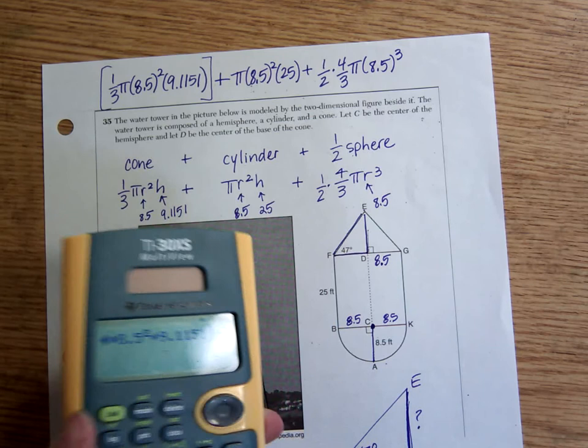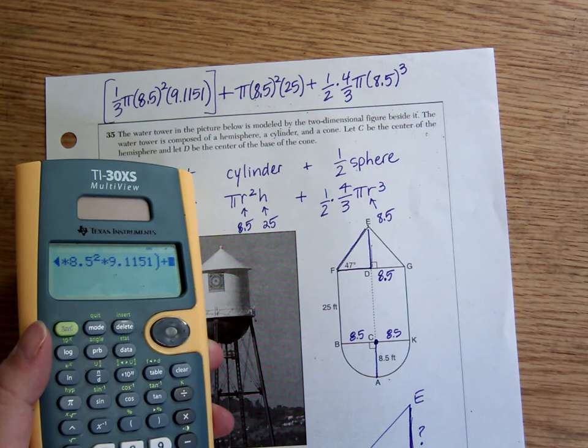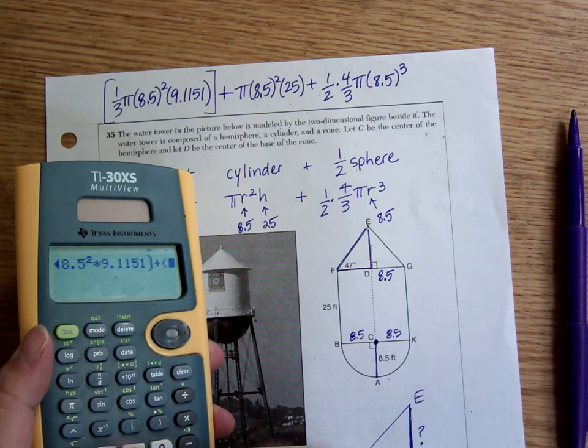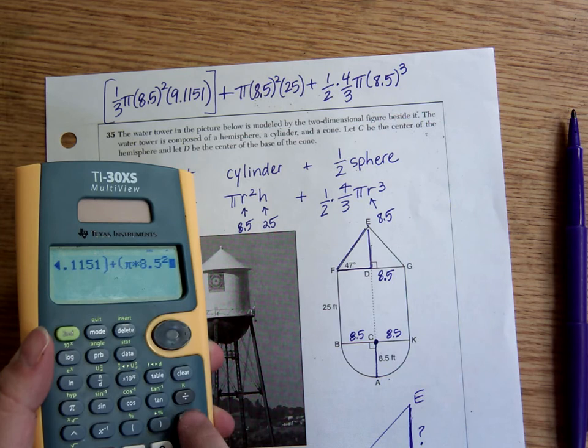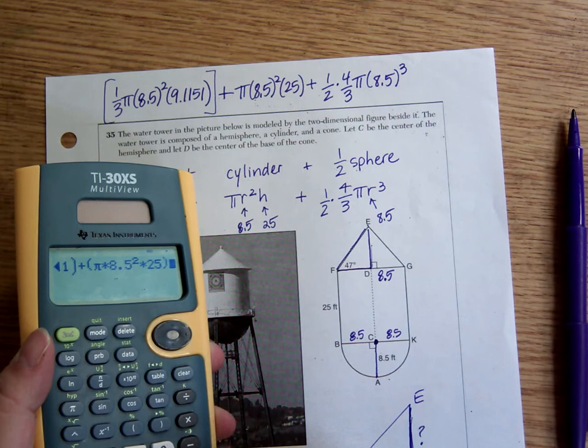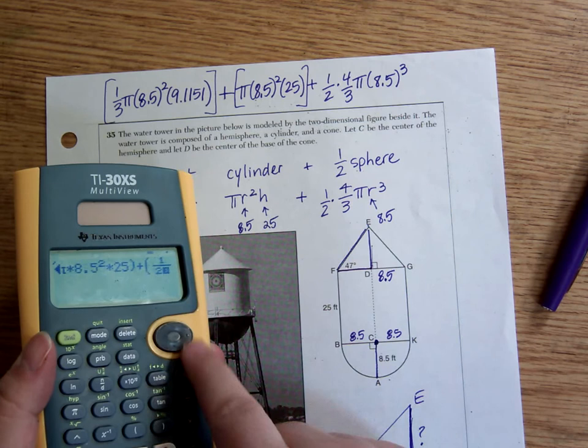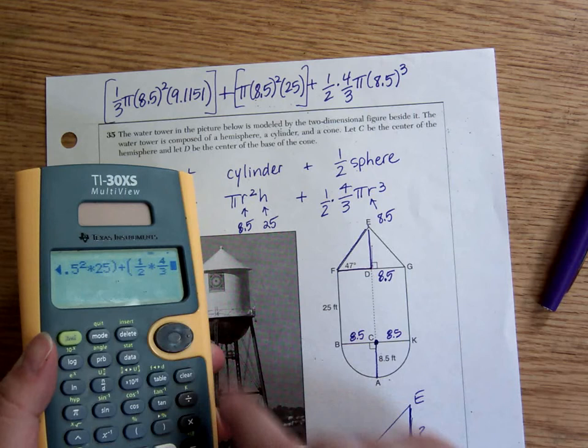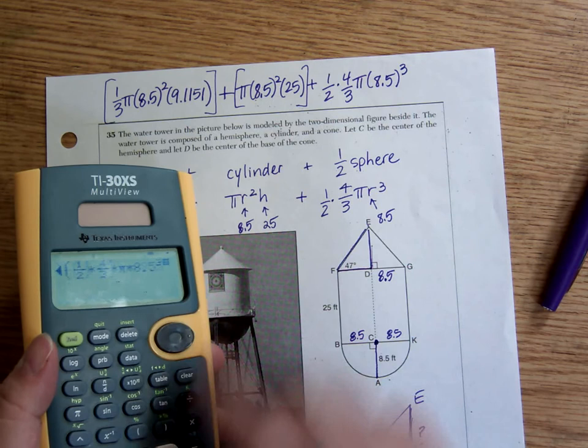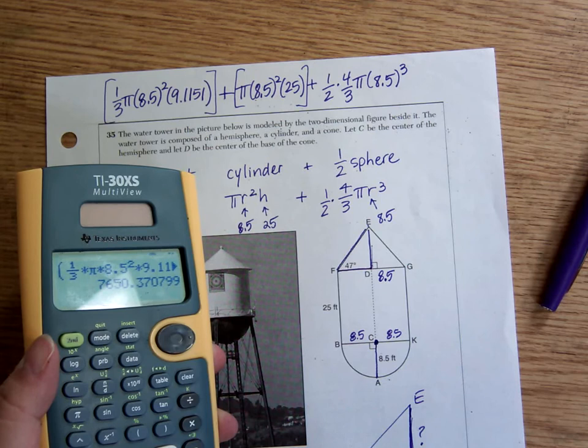Plus, sorry that you can't see through the glare. I was thinking it was perfect, but then I moved it. Now I've got to do these, again in parentheses. Pi, always use the pi button, times 8.5 squared times 25. Close that parentheses out, that's basically this part. Plus, parentheses, 1 half times 4 thirds times pi times 8.5 cubed, parentheses closed. And I get 7,650.37.